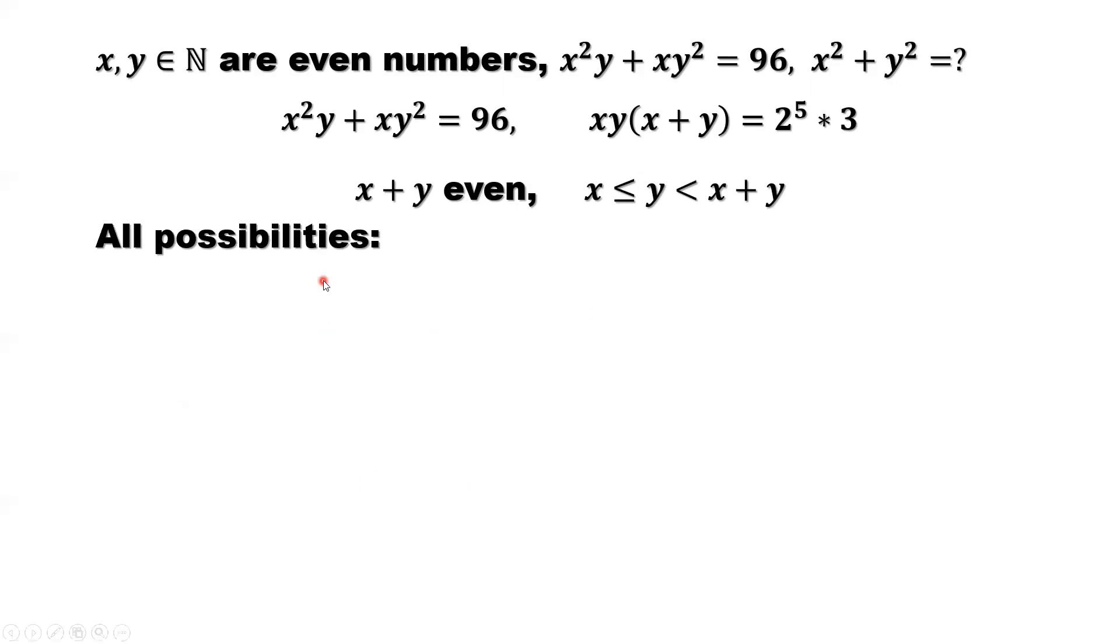We list all possibilities for the possible decomposition of 96. We decompose 96 into three parts, the product of the three numbers. The first number is x, second number is y, the third number is x plus y. How to list all possibilities? You have to follow a pattern. Then you will not miss any possibility. We start from the lowest possible number. Because that's a positive even number, so x starts from number 2.